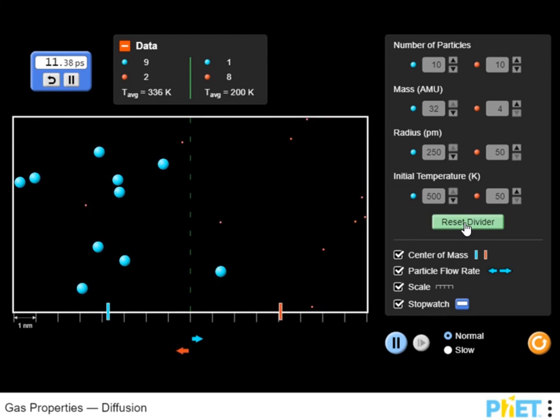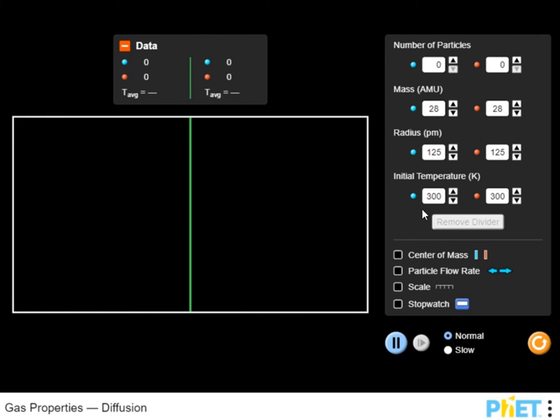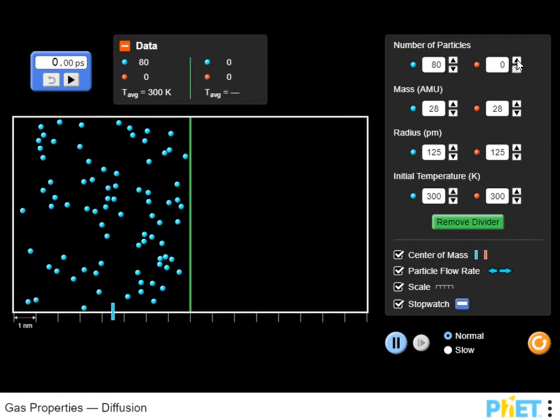You will use the mouse to click and increase or decrease different settings for the simulation. You can adjust the number of particles, the mass, the radius and the initial temperature of the particles to see what will happen when the center divider is removed.